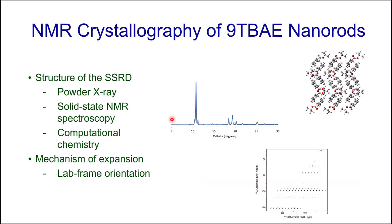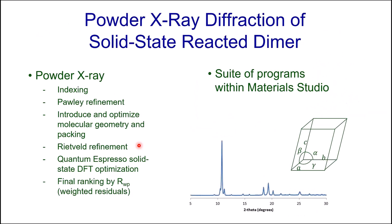The approach we're taking is this NMR crystallography combination of solid state NMR, powder X-ray diffraction, and computational chemistry. In this case it will take all three to determine the crystal structure. Armed with that knowledge, we'll hopefully be in a position to understand the mechanism of expansion, and we'll actually have to make laboratory frame measurements of the orientation of the crystal unit cells within the nanorods.